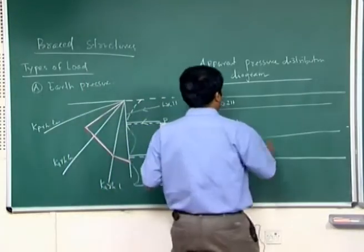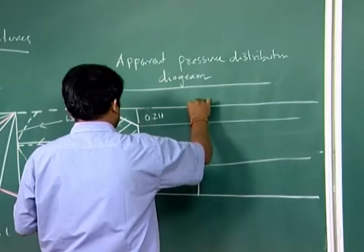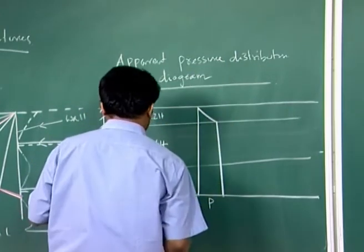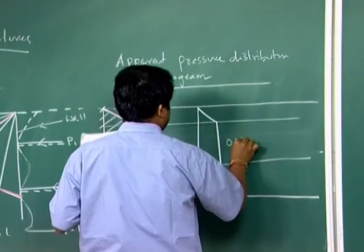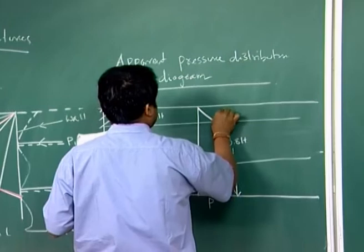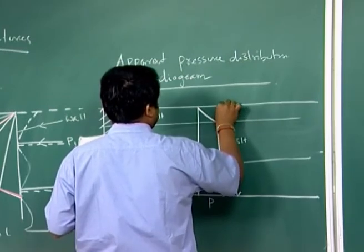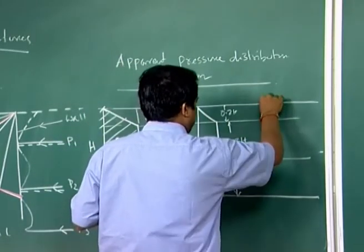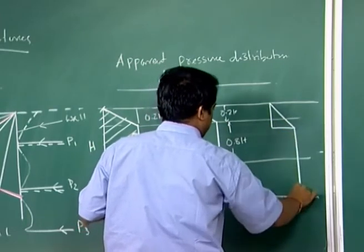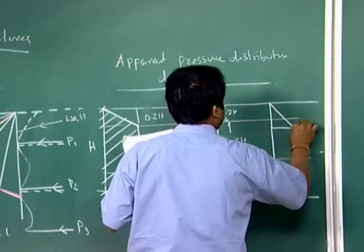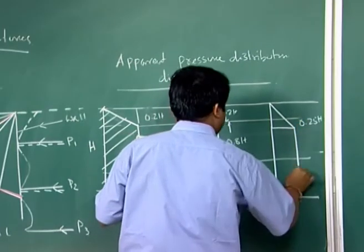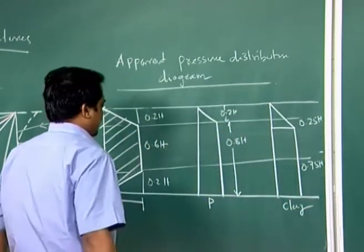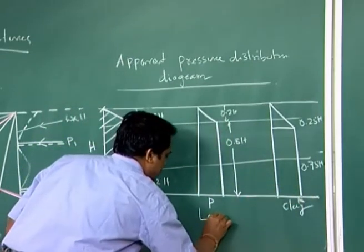For loose sand, the apparent pressure distribution diagram will have P at the top, with a value of 0.8h and 0.2h. For clay, the distribution is 0.8h, with 0.25h and 0.75h dimensions, and this is also P. This is for loose sand.